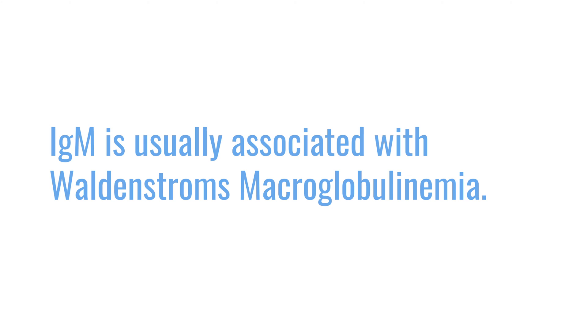IgM is kind of in a special class by itself. On occasion, people have myeloma that makes an IgM monoclonal protein. In general, people who have a very high level of IgM don't have myeloma — they fall into a category called Waldenstrom's macroglobulinemia, which is sort of like a low-grade or slow-growing lymphoma, sometimes termed lymphoplasmacytic lymphoma. They rarely have true myeloma.